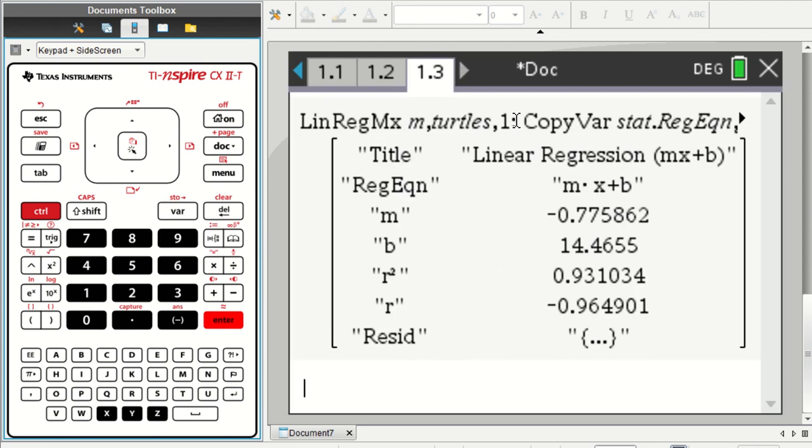And the actual command, sort of the calculator details of the command are up here in the top. They describe the type of equation, the format for the regression equation. They give us the slope, which is negative 0.776, let's say.